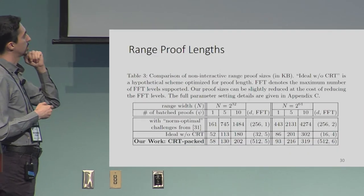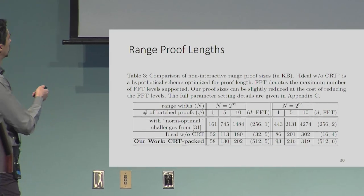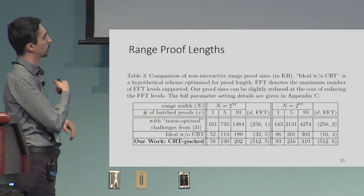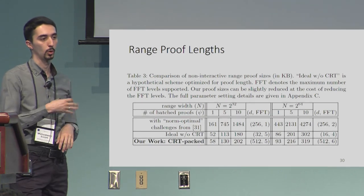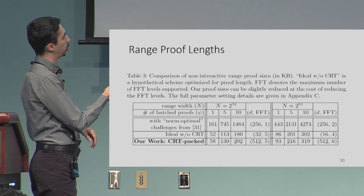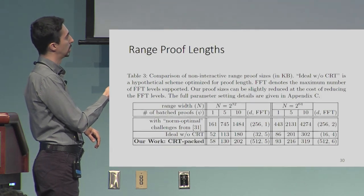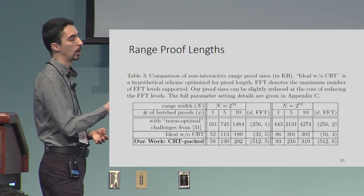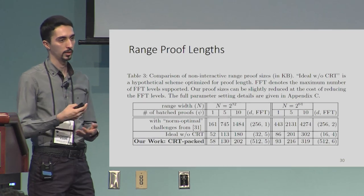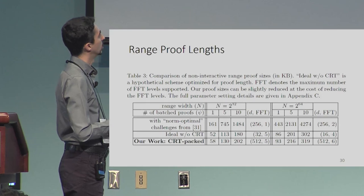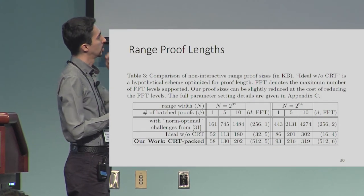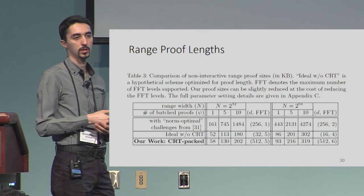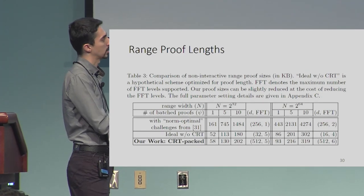In the range proof comparison, our CRT-packed scheme achieves proof lengths very close to a hypothetical scheme optimized purely for proof length — the small gap exists only because our ring size must be a multiple of 512. But looking at degree D and number of FFT levels supported, we have much faster computation overall.